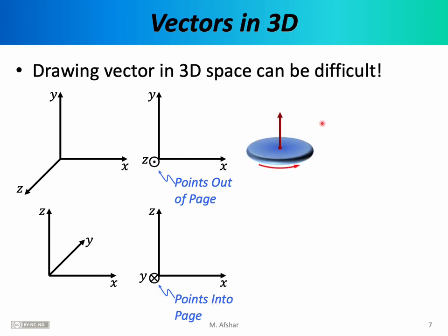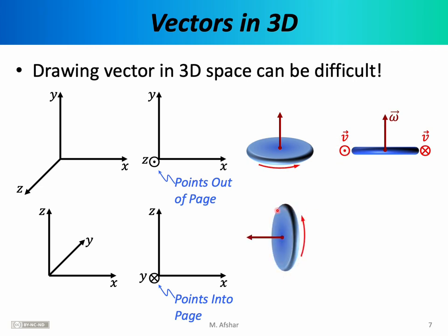To represent a disk with an angular velocity vector pointing upwards, we draw the vector and then for a point on the right edge of the disk, at that moment it is going into the page — represented by an x with a circle. A point on the left edge is coming out of the page — represented by a dot with a circle. For a disk rotating with the angular velocity vector pointing to the left, the top point goes into the page and the bottom point comes out of the page.